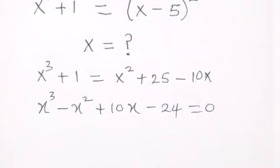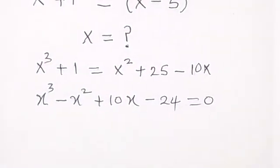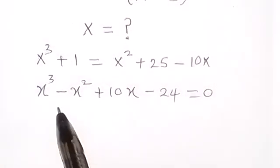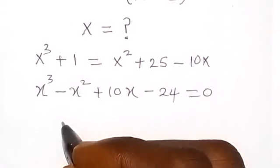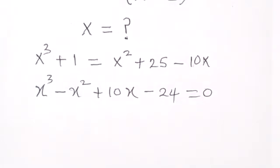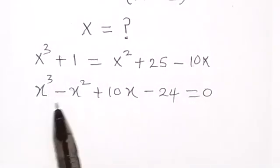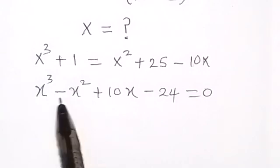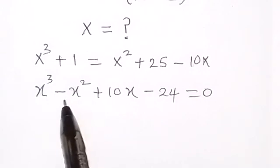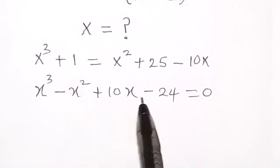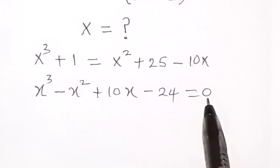We have formed a cubic equation. When we inspect it by substituting x equals 2, we get: 2 cubed is 8, minus 2 squared is 4, giving 8 minus 4 equals 2, then plus 2 times 10 is 20, so 20 plus 4 is 24, and 24 minus 24 gives us zero.